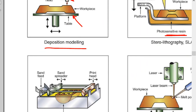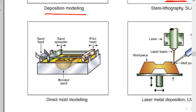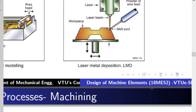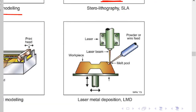In direct mold modeling, a sand mold is built layer by layer by selective spraying of binder from a scanning printhead. In laser metal deposition (LMD), powder or wire is fed onto a surface and selectively sintered — heated — by a laser beam. As the powder gets sintered it becomes hard, and the required shape is gradually obtained.